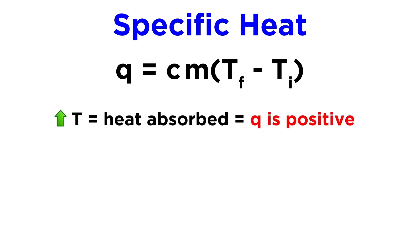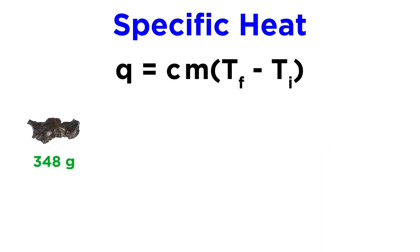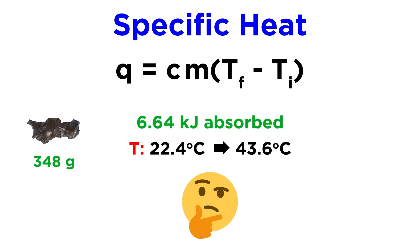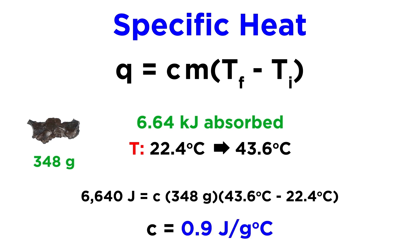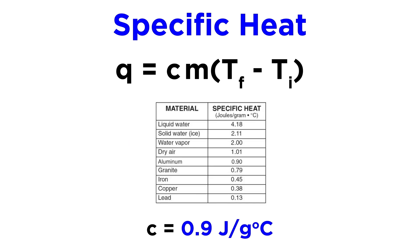If the temperature goes up, it will have absorbed heat, and q should be positive. If temperature goes down, it will have released heat, and q should be negative. Let's see if we can calculate the specific heat of a substance. A piece of unknown metal weighs 348 grams. After absorbing 6.64 kilojoules of heat, its temperature went from 22.4 to 43.6 degrees Celsius. What is the specific heat, and what substance is it likely to be? Let's use our equation for specific heat and plug in all the known values. We should get an answer of 0.9 joules per gram degree Celsius. Looking back at our table of specific heats, it seems likely that this sample must be a piece of aluminum. So specific heat data is very useful for identifying unknown substances.